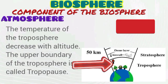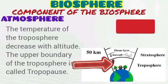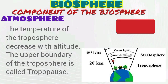Temperature in the troposphere decreases with altitude. The troposphere is mainly heated from the bottom. Solar energy that reaches the surface is absorbed, heating the troposphere from the bottom, while others are trapped by gases in the troposphere. Based on the fact that the troposphere is heated from the bottom, as you move up in altitude, the temperature eventually decreases.